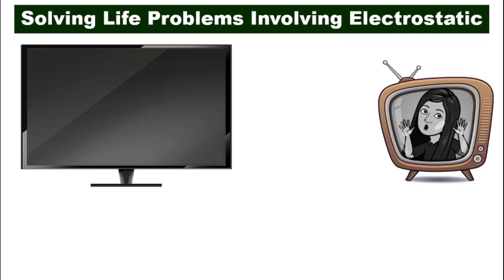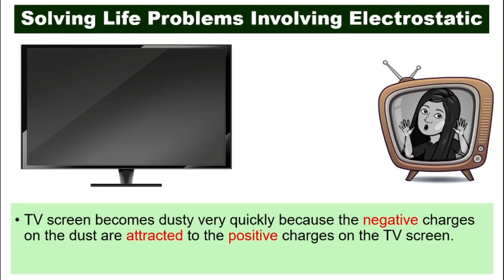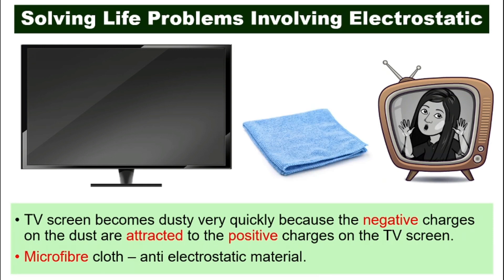Have you ever tried to wipe your TV screen? After wiping it, it becomes dusty again almost immediately. This is because the TV screen is positively charged and attracts dust that has negative charges. We can solve this by wiping the TV screen with a microfiber cloth, which is anti-electrostatic, so the screen will not become dusty too quickly.